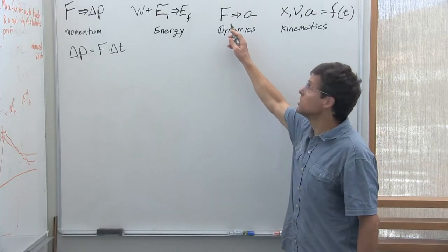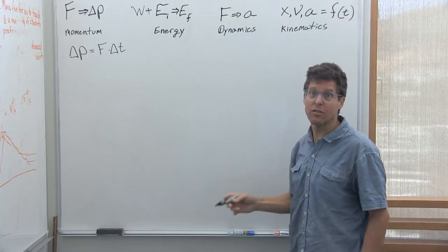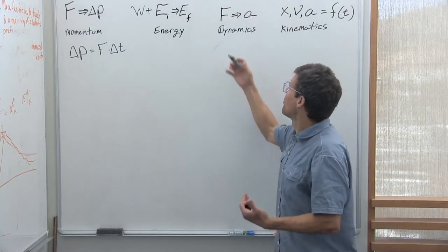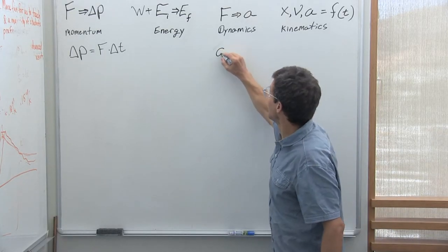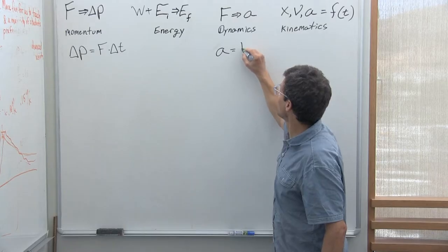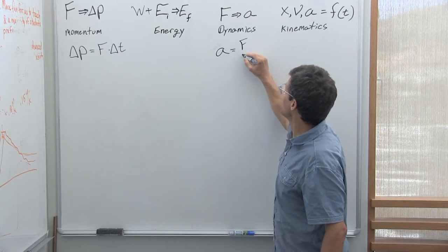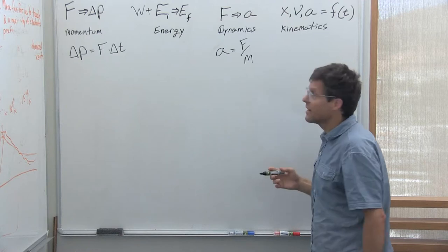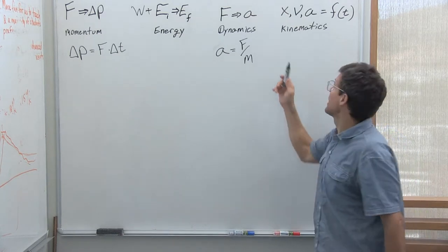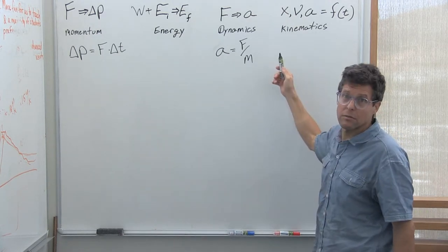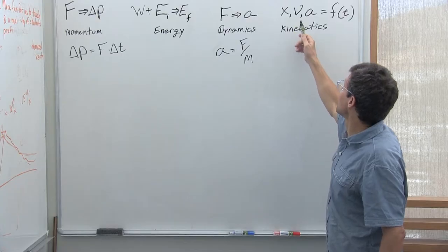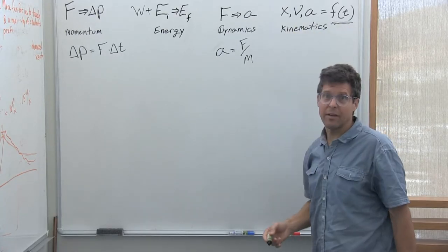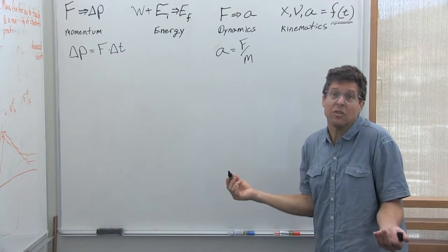If forces are accelerating an object, you can use the dynamics lens, starting by identifying the forces and saying that acceleration is equal to the force divided by the mass. And lastly, if you can look at motion — displacement, speed, acceleration — as an explicit function of time, then you can use kinematics.